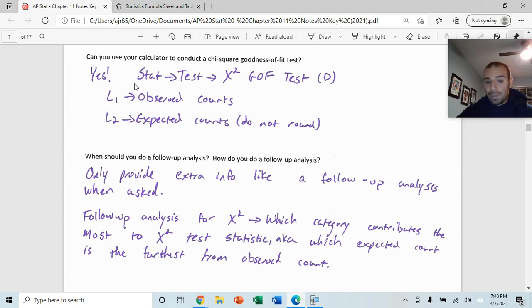You may be asked to do what's called a follow-up analysis. A follow-up analysis, only do when they ask you to do it, and only provide that extra info. When you're running a follow-up analysis for chi-squared, you want to discuss which category contributed the most to the chi-squared test statistic, or in other words, which expected count is the furthest from the observed count. Which of these is causing the chi-squared value to be the largest? Which of them is the most unrealistic, furthest away from what we would have expected to have happened?